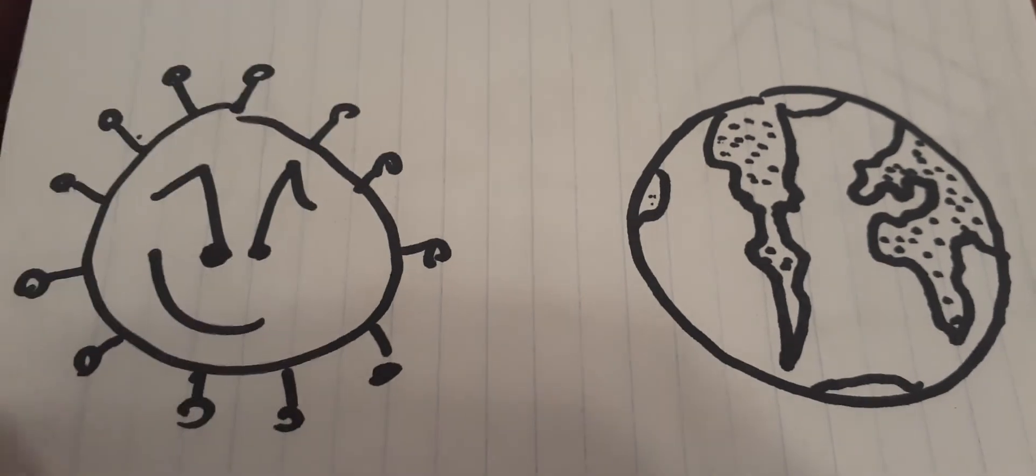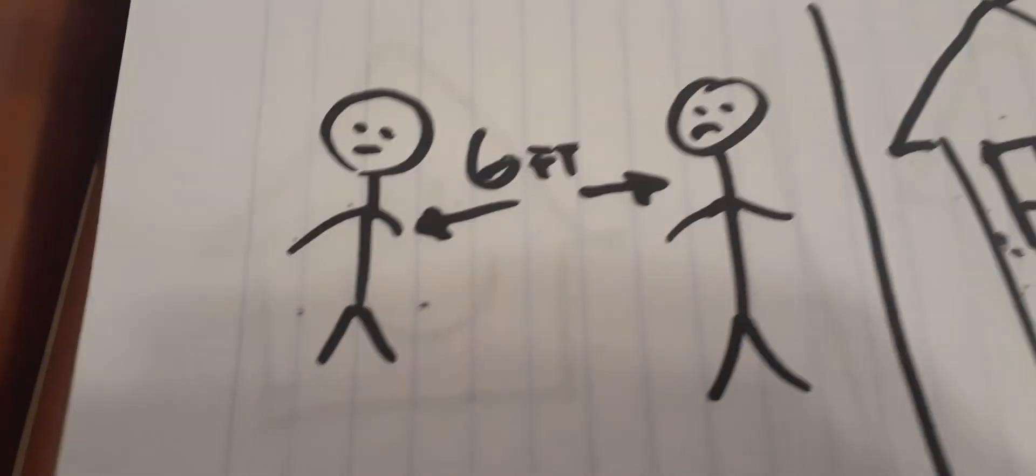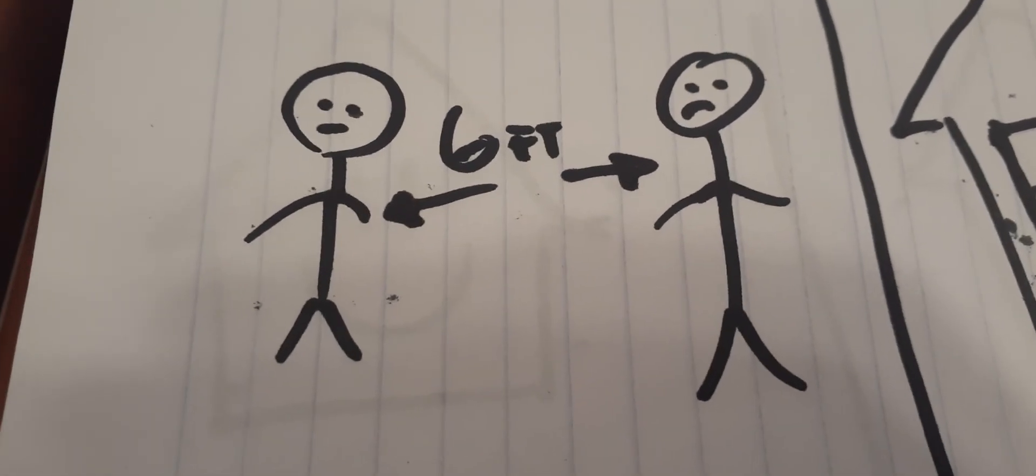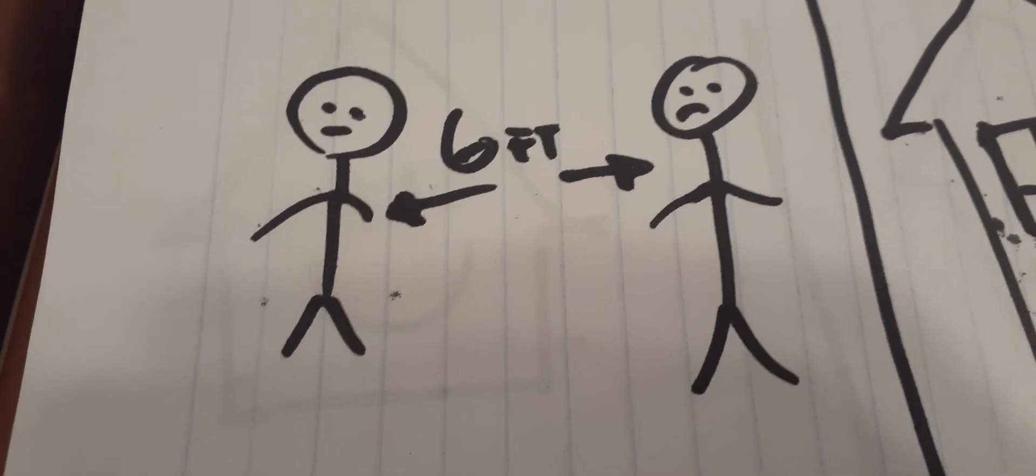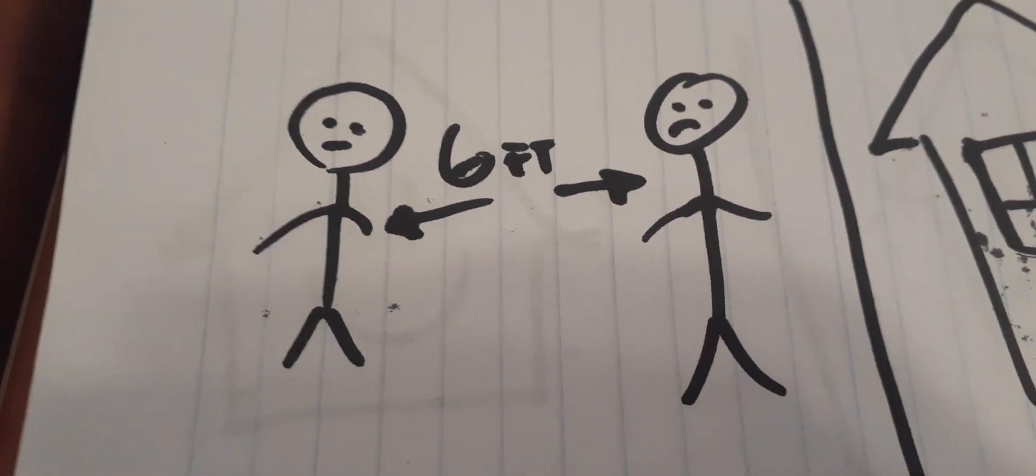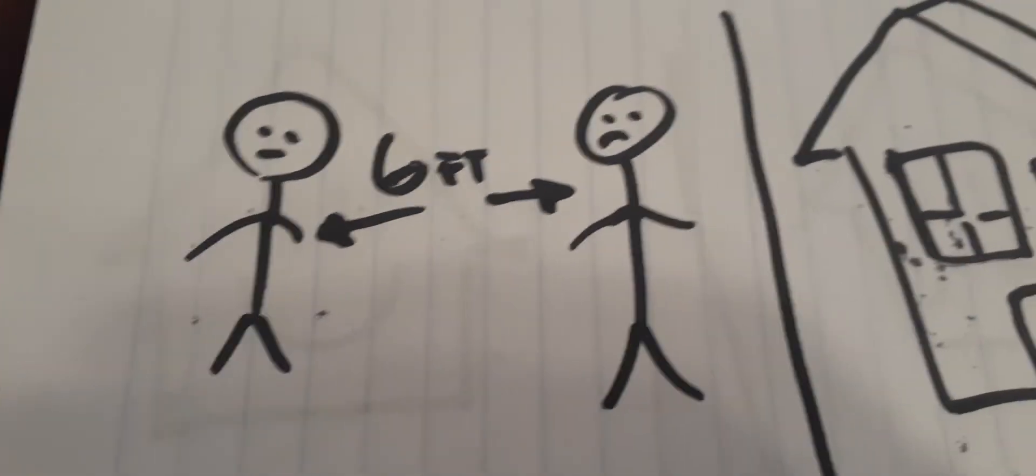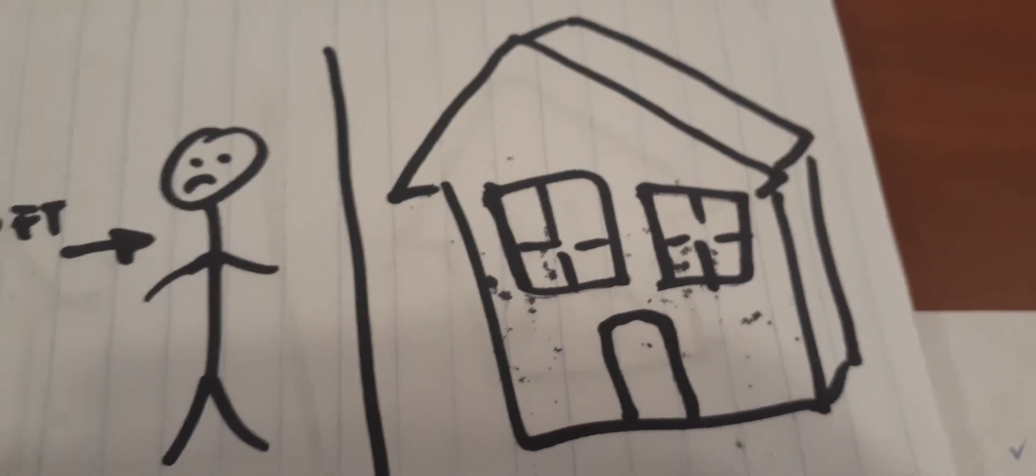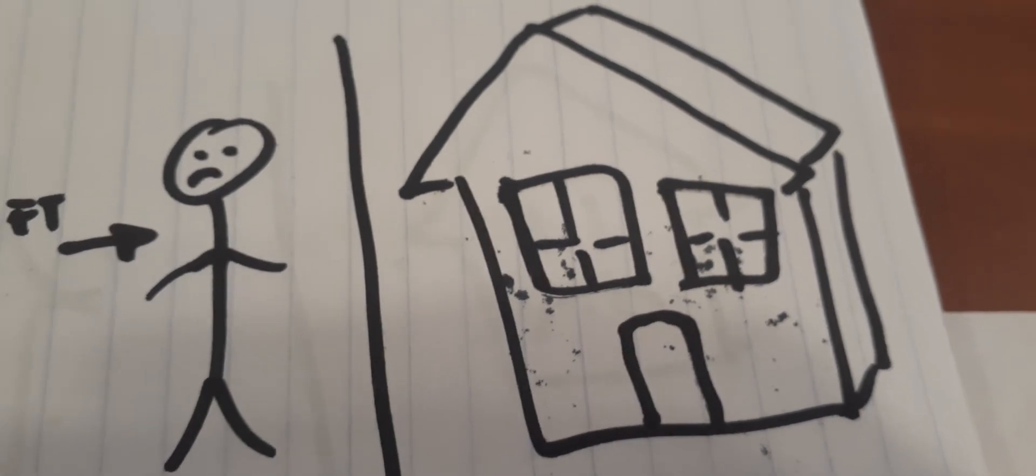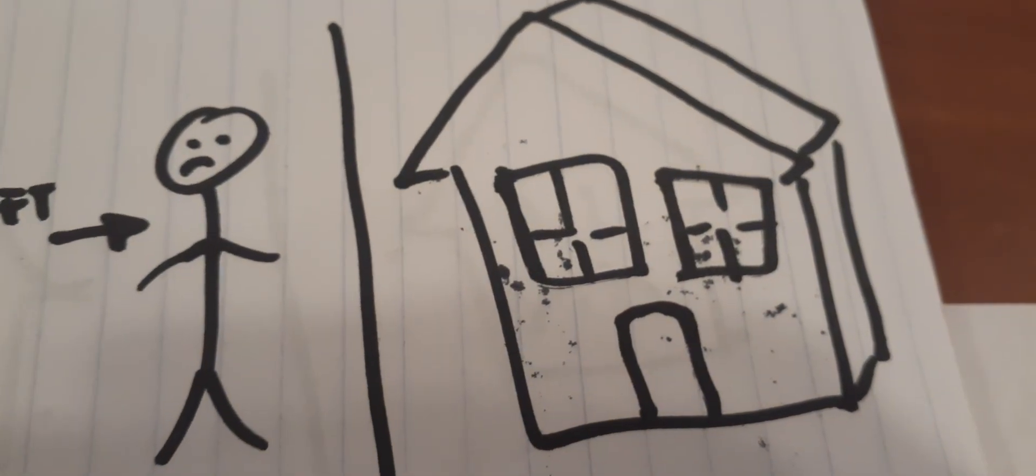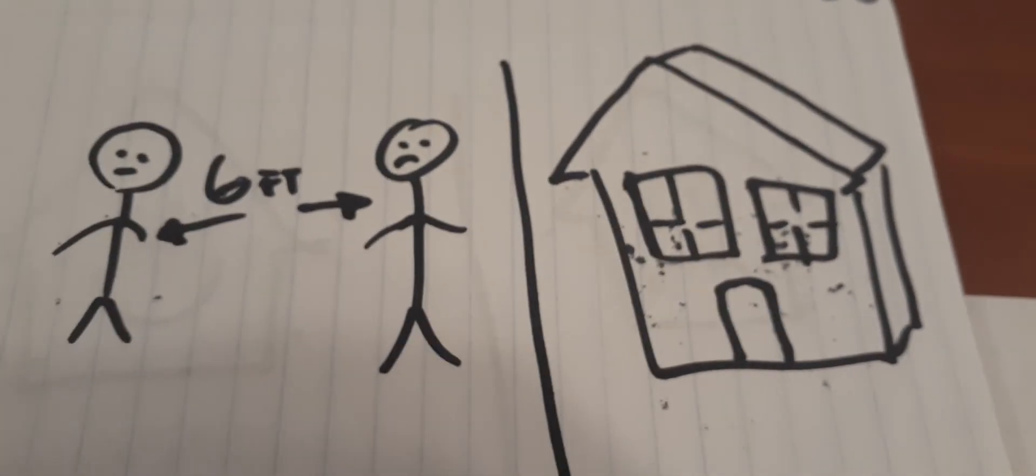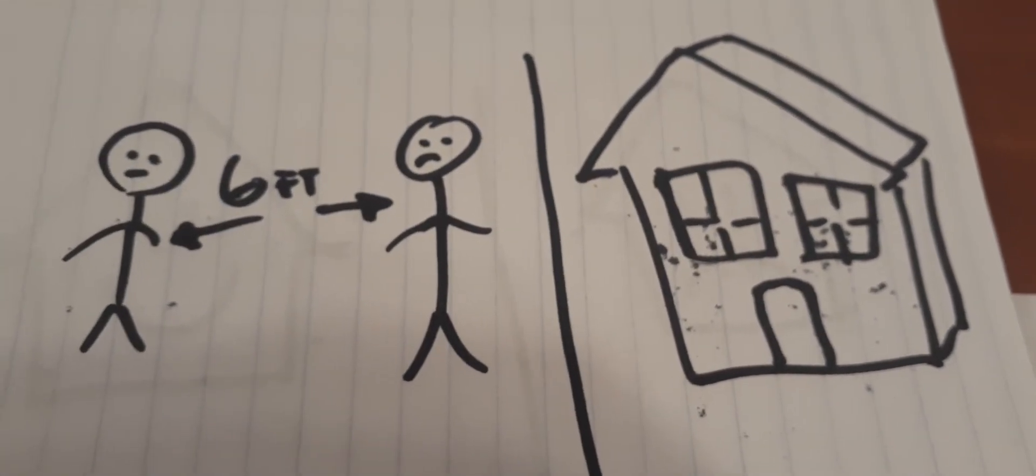What we do about it is we started social distancing, staying away six feet from each other. That's not a pleasing feeling, being away from everyone since we're social people. Then we went home and we stayed home. We try not to go out a lot, and if we have to go out, we go out for essential stuff. So this pretty much became a big social isolation.